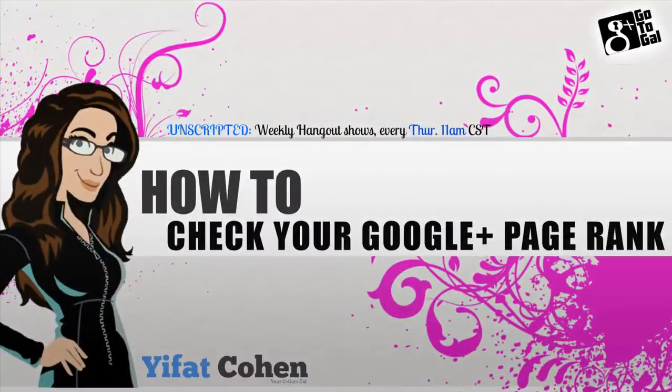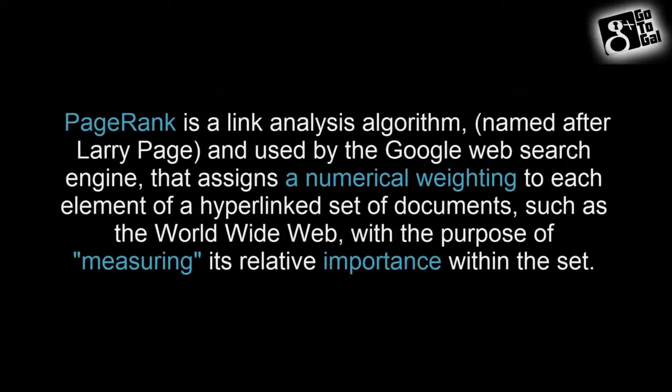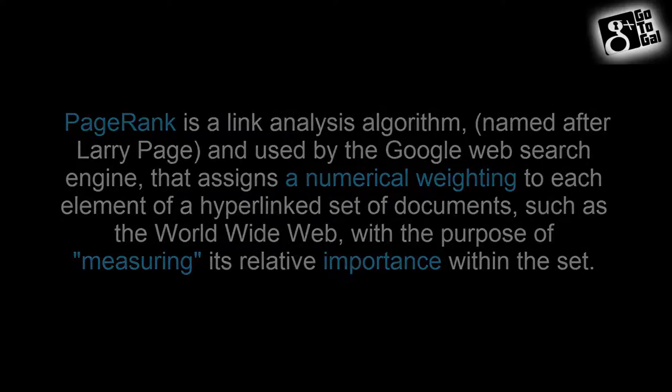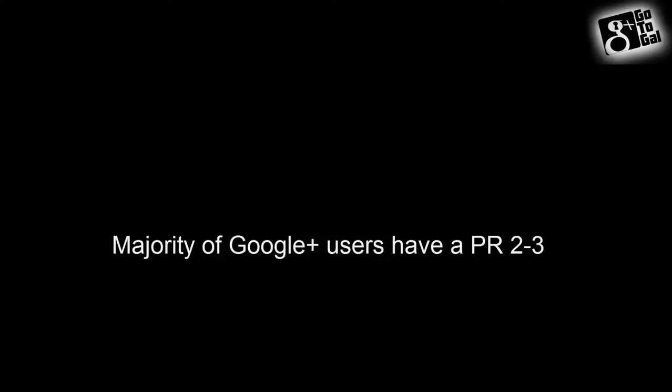How do you check page rank? What is page rank? Google ranks every profile, every user's profile, the same way that they rank every other page on the web, meaning that if you have a higher page rank you will show more in search, and you can even outrank people for their own posts. The highest page rank is 8 for the White House. Most Google employees and a few other influencers have a page rank of 6. There are about 300 people with a page rank of 5, and most other people are somewhere between 2, 3, and 4.